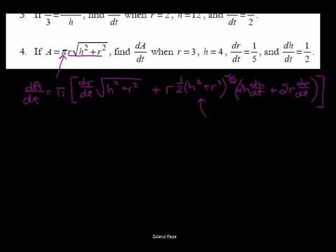The derivative of the inside function is 2h times dh/dt plus 2r times dr/dt. So there is our differentiation step. Now from here we're just solving for dA/dt and they gave us values for everything else to plug in.